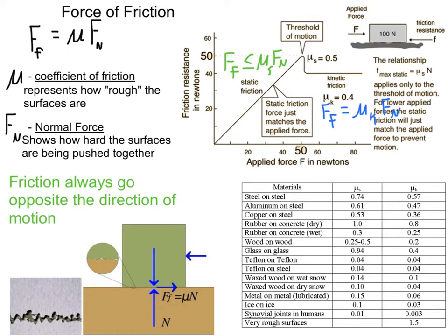The force of friction, whenever we're talking about static — stationary — is actually not always equal to mu times normal force. That's actually the maximum amount of force that it can apply. Instead, static friction is just trying to keep the box stationary. So you push a little bit harder and friction will perfectly balance it out. You push even harder, friction perfectly balances it out, till eventually you overcome static friction.